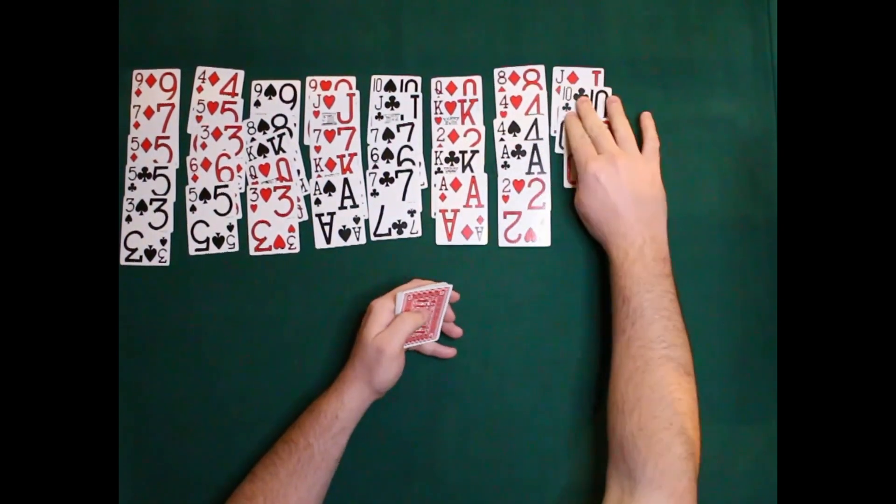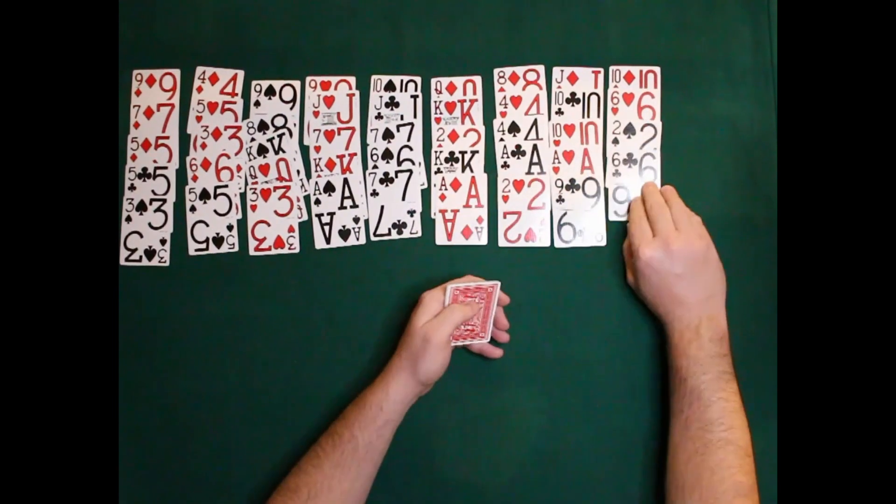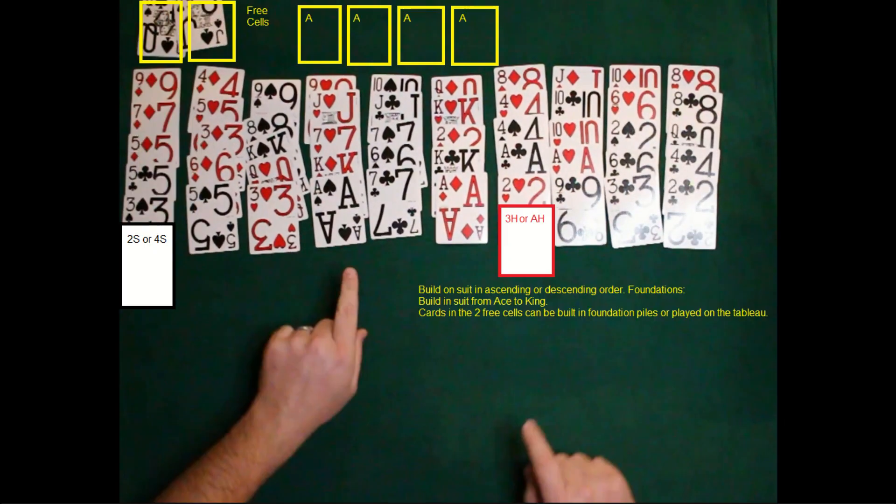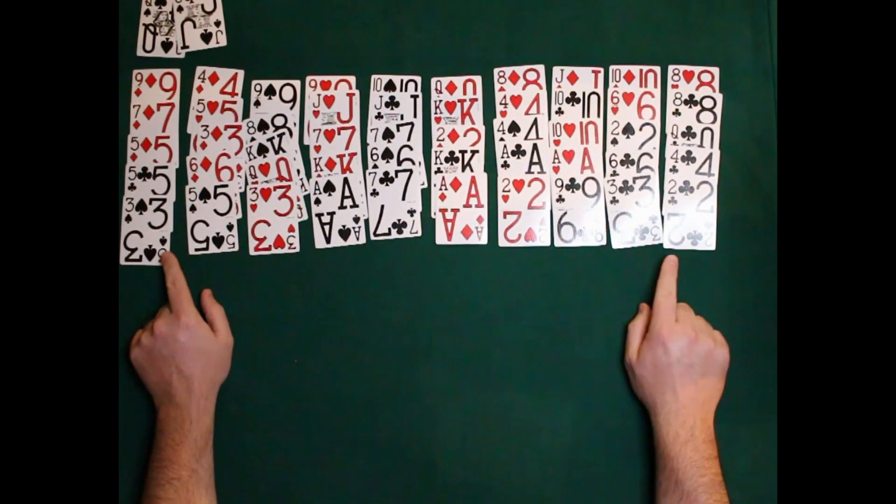So it'll be two free cells for this game, and those free cells can be played either on the tableau or on the foundations. On the tableau we can play cards up or down in suit, and the foundations we're building from ace to king in suit. So we're basically one move at a time.